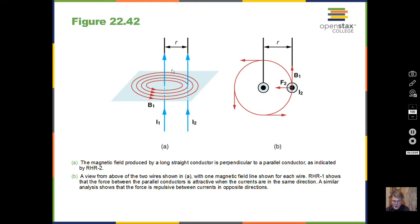To summarize: two wires with current in the same direction — go step by step with the right-hand rule. Current from wire one creates a magnetic field into the paper at wire two. The right-hand rule for force on a current-carrying wire then gives a force to the left — an attractive force.